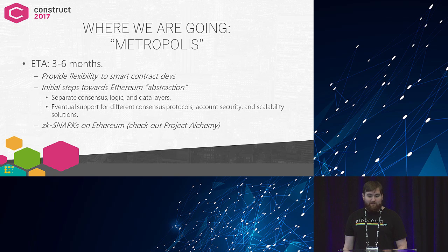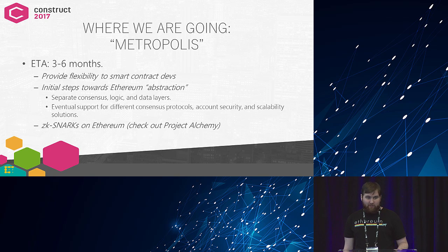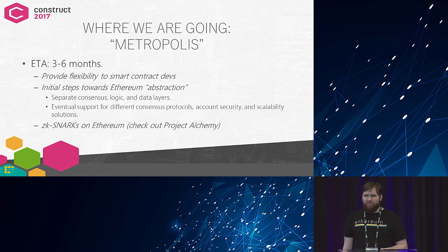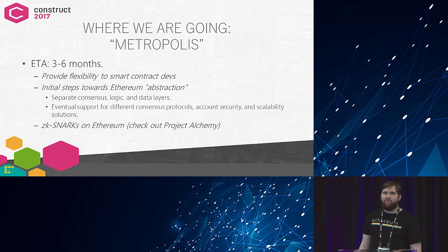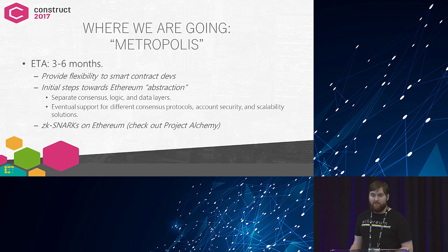So where are we going? We're going to Metropolis, which is the next phase of Ethereum development. Frontier was the launch, Homestead brought stability upgrades, and Metropolis provides a lot more flexibility for smart contract developers. They're putting in features where smart contracts can pay their own fees, so when you send a transaction, the smart contract itself can fund the transactions going forward rather than you having to fund it externally every time.